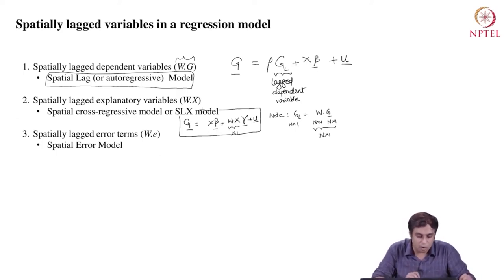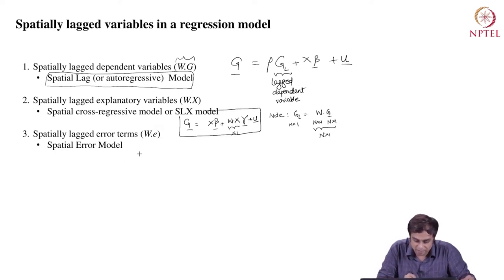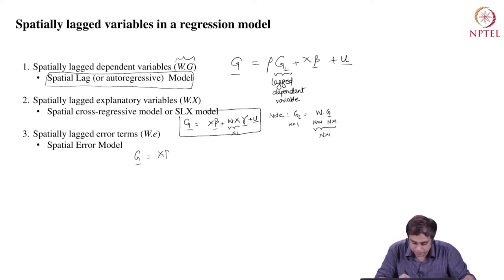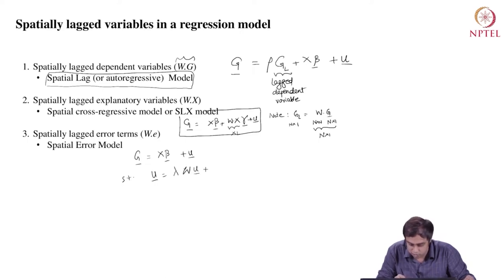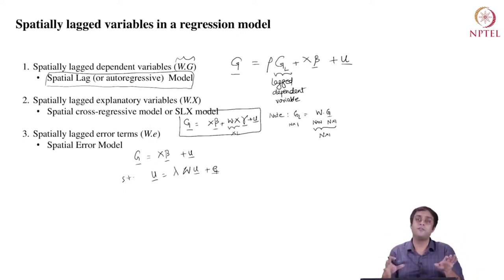The final form here is called the spatial error model, where G equals X beta plus U, such that U exhibits spatial dependence. We will carefully review each of these models one by one, so there is nothing to worry about. I just wanted to provide a quick exposition so that in our coming discussions, you start to become more comfortable with these notations.